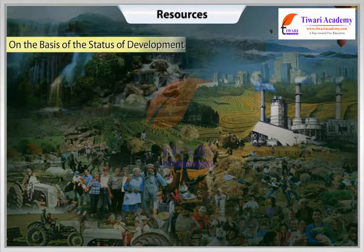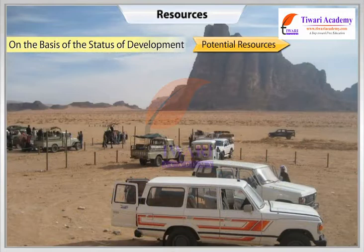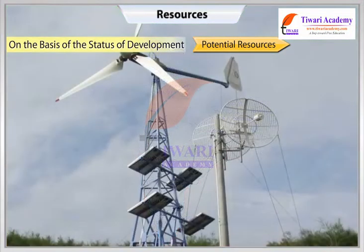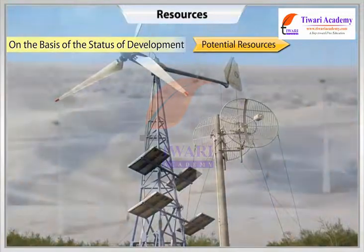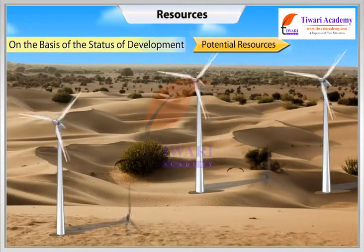On the basis of status of development, potential resources are those found in a region but not yet utilized. For example, the western parts of India, particularly Rajasthan and Gujarat, have enormous potential for the development of wind and solar energy, but so far these have not been developed properly.